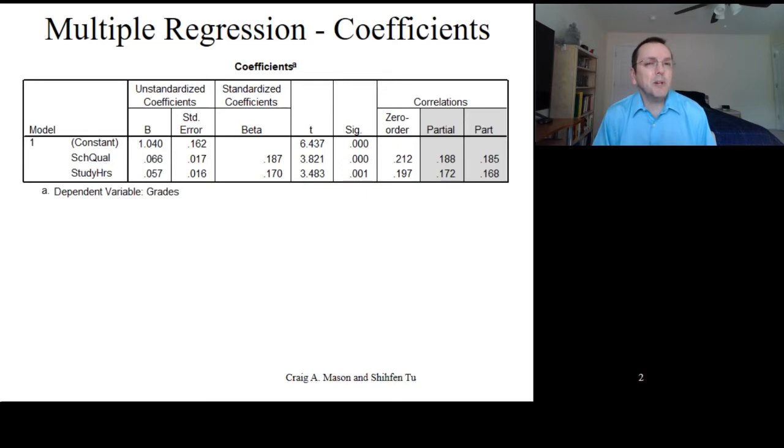So, what does the coefficients table tell us? We have a column labeled model that indicates this is model number one. To begin, we'll just look at one regression model at a time, but later we'll see that we can examine several models in a single comprehensive analysis. We then have a list of the variables in our model, and remember that the constant is just another term for the intercept.